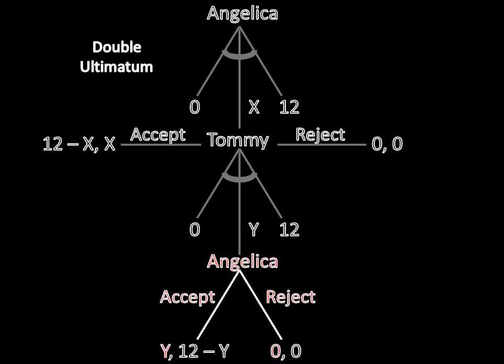Angelica gets zero here for rejecting, thus to accept Y will have to be greater than zero. That is, Tommy will have to offer her something.